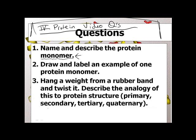That almost gave away the answer. This is my favorite way to describe how protein structure drives their function. For number 3, I want you to hang a weight from a rubber band and twist it — it might be a water bottle or whatever you can find with a little bit of weight. Continue twisting until the rubber band begins acting funny. You will be able to describe the analogy of this rubber band to protein structure: primary, secondary, tertiary, and quaternary. In your journals, number 1 describe the protein monomer, number 2 draw and label an example, number 3 do the rubber band activity and make an analogy to protein structure. Here we go.